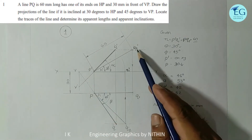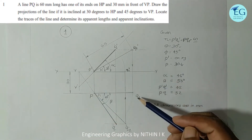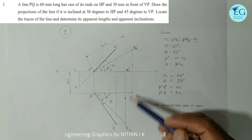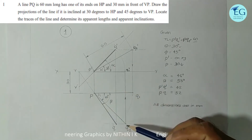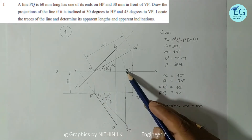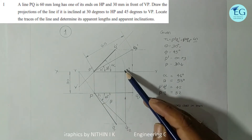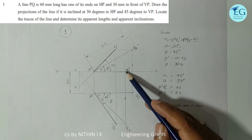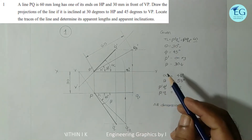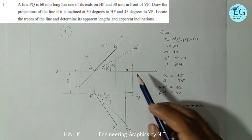Next, P'Q1' gives the top view PQ1, and P'Q2' gives the front view PQ2. Q1 is obtained by projecting from Q1', and Q2 is the front view. PQ2 in the front view is parallel to XY. This step carries 2 to 4 marks.